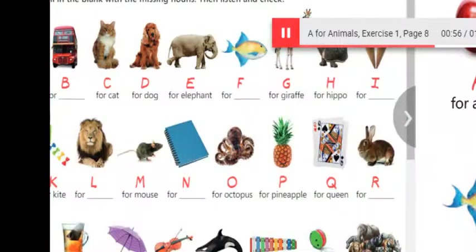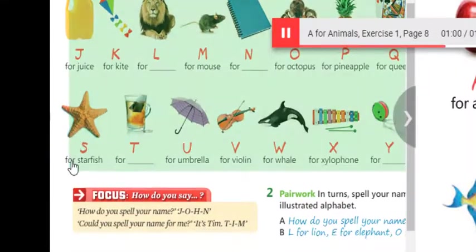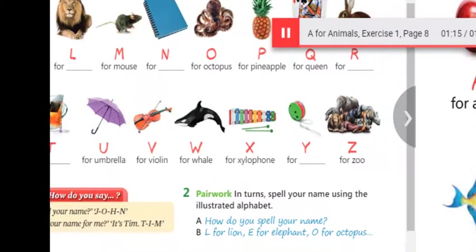R for rabbit, S for starfish, T for T, U for umbrella, V for violin, W for whale, X for xylophone.